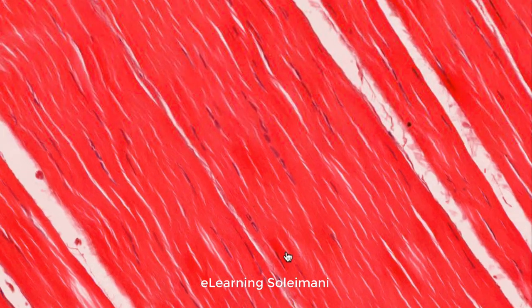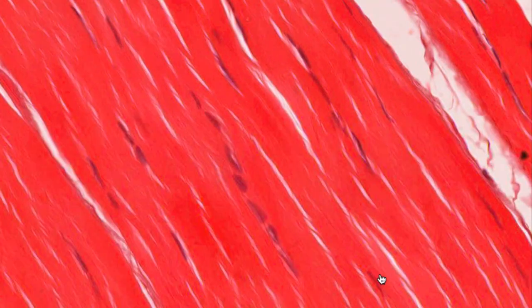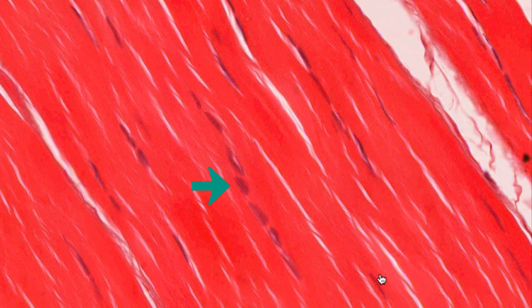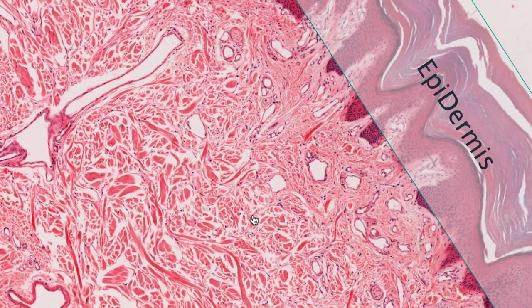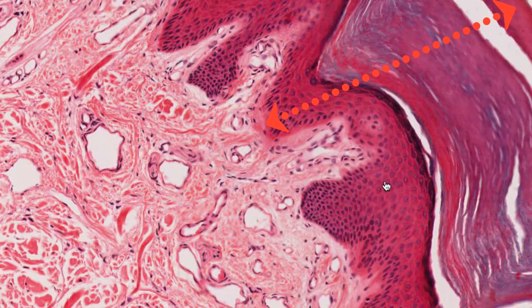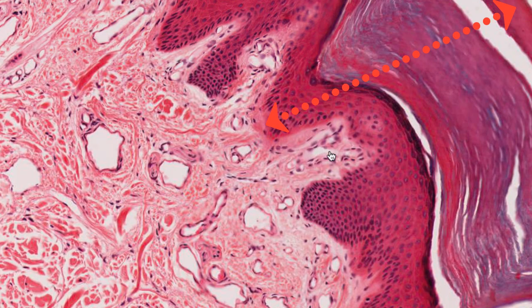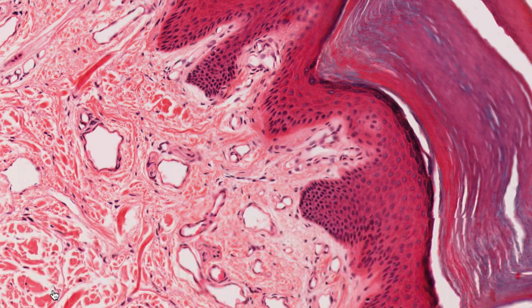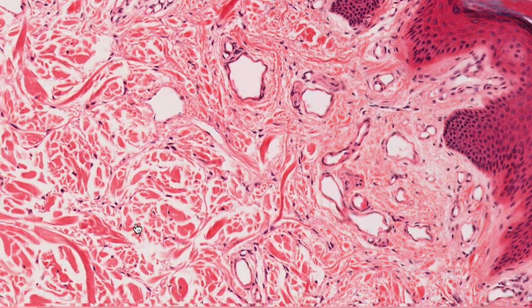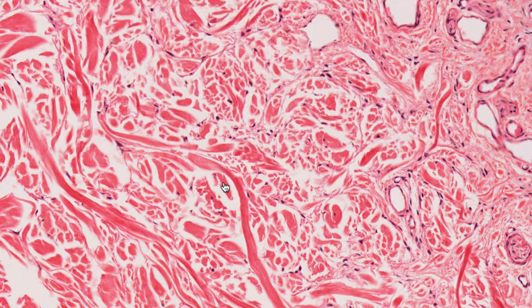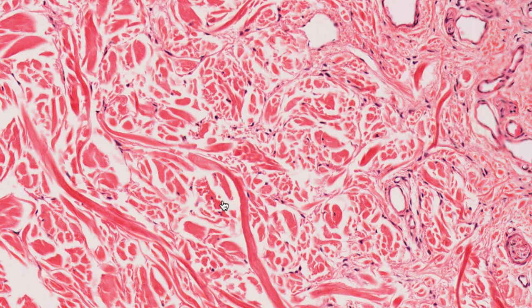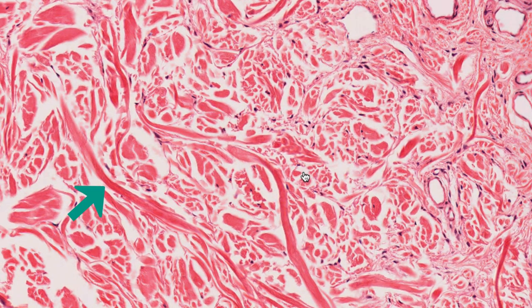Fibroblasts present in tendons are referred to as tenocytes. Skin includes the epidermis and dermis. The epidermis is stratified squamous epithelium. The reticular region of the dermis consists of irregular dense connective tissue containing short collagen fibers.